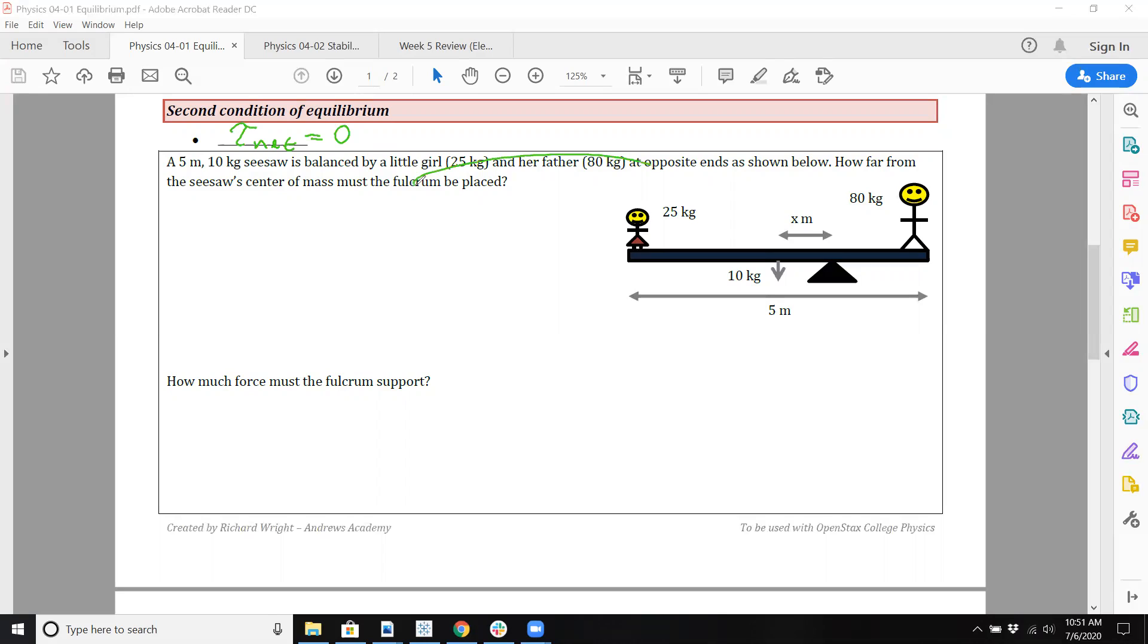So fulcrum's right here, so you're trying to find actually the right balance. Now this symbol here is called summation notation. Maybe if you're in pre-calc you covered it. I know we didn't do it in algebra two. It's a Greek letter called sigma.